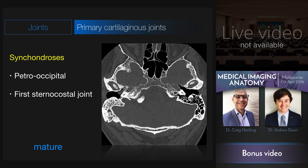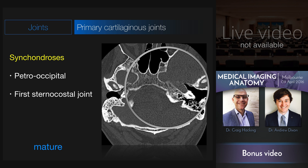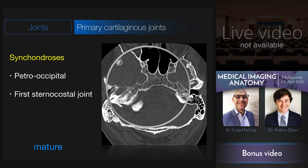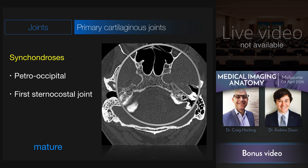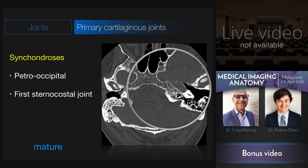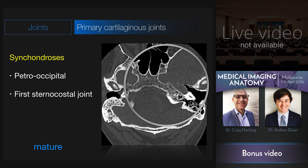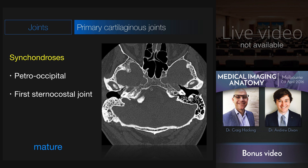Only a few primary cartilaginous joints persist in the adult. The most important one is the petro-occipital synchondrosis, between the clivus of the occipital bone and the apex of the petrous temporal bone. This is important radiologically because it's a site where chondrosarcomas can occur. The first sternocostal joint is another example of a primary cartilaginous joint composed of hyaline cartilage that persists in the mature skeleton.